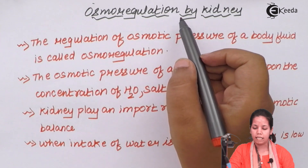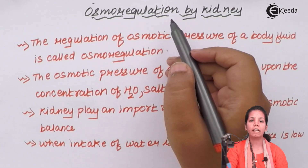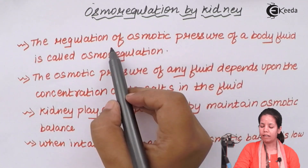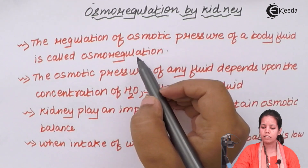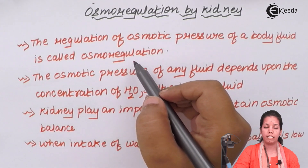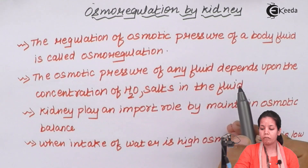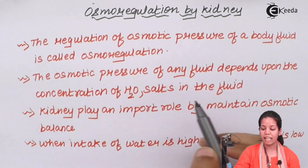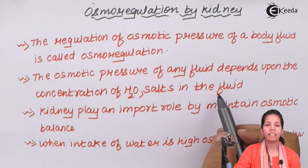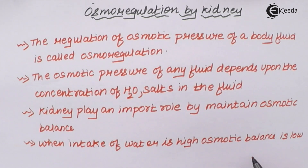Maintaining the osmotic balance of your body is a very crucial and detrimental part of your kidney's function. The regulation of osmotic pressure of body fluids is termed as osmoregulation. This means trying to maintain water-electrolyte balance in your body on a day-to-day basis, which is the primary function of your kidney along with excretion. The osmotic pressure of any fluid depends upon the concentration of water and salts in that fluid — this fluid could be your blood or lymph. When the intake of water, especially in summers, is very high, your osmotic balance is obviously low.